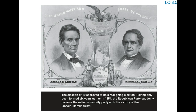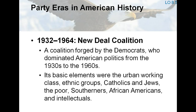The election of 1860 proved to be a realigning election. Having only been formed six years earlier in 1854, the Republican Party suddenly became the nation's majority party with the victory of the Lincoln-Hamlin ticket. 1932 to 1964: the New Deal Coalition. President Herbert Hoover's handling of the Great Depression was disastrous for the Republicans; he took the position that economic depression cannot be cured by legislative action. Franklin D. Roosevelt promised a New Deal and easily defeated Hoover in 1932. Congress passed scores of Roosevelt's anti-depression measures during his first 100 days in office. Party realignment began in earnest after Roosevelt forged the New Deal Coalition from diverse groups such as union members, Southerners, intellectuals, liberals, the poor, and African Americans.